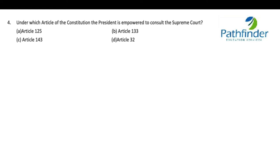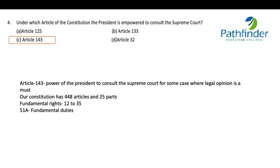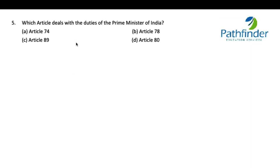Next question: under which article of the Constitution is the President empowered to consult the Supreme Court? The correct answer is Article 143, which confers on the President the power to consult the Supreme Court in cases where legal opinion is required. Our Constitution has 448 articles and 25 parts. Key articles include: Articles 12–35 for Fundamental Rights, Article 51A for Fundamental Duties, Article 81 for seats of Lok Sabha, Article 356 for imposition of President's Rule, Article 370 for special status to Kashmir, and Article 352 on declaration of National Emergency.